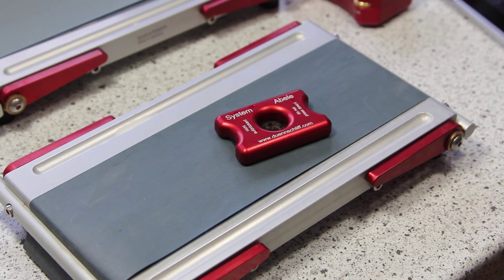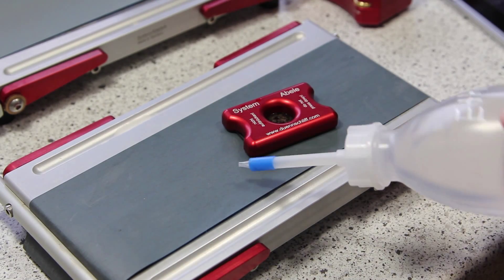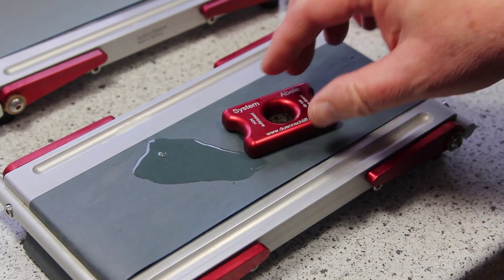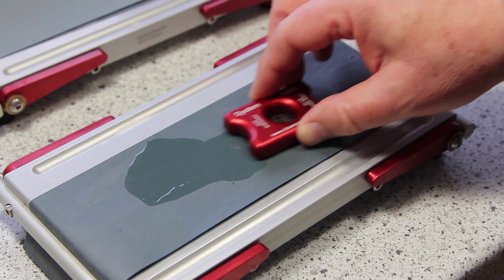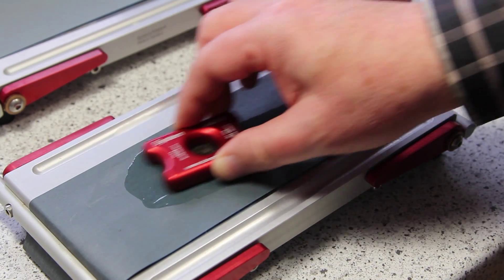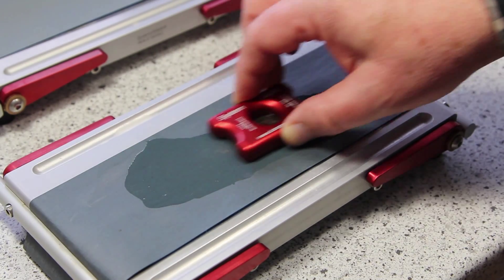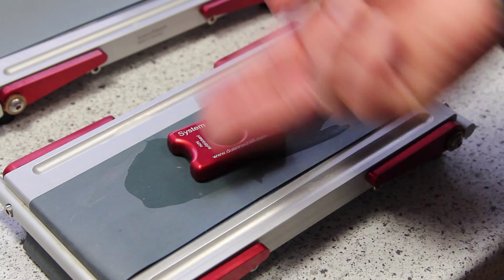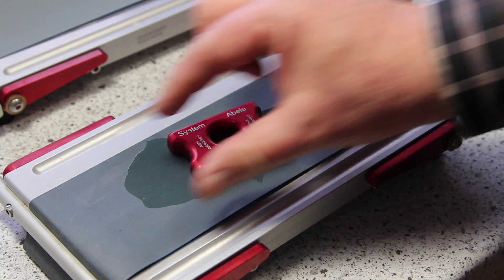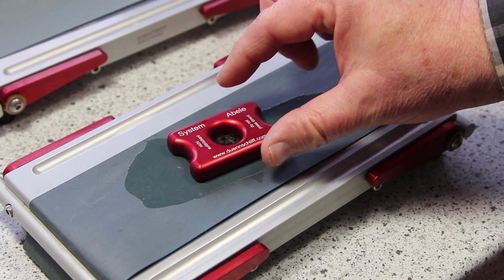And now I put a little bit of ethanol on the surface and I finish the surface of the sample. The machine moves this way and I move crosswise.